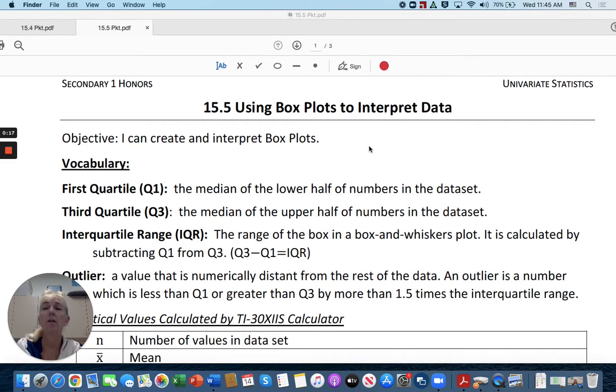And I'm going to say box and whisker plots because they will include some lines on the ends. So we have vocabulary here. The first quartile, again, this should just be review for some of you, for all of you actually.